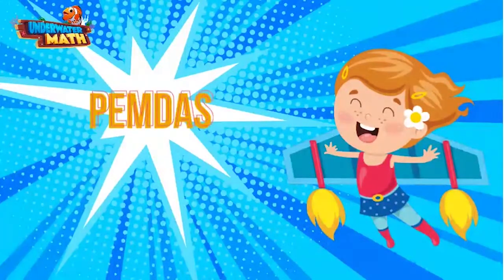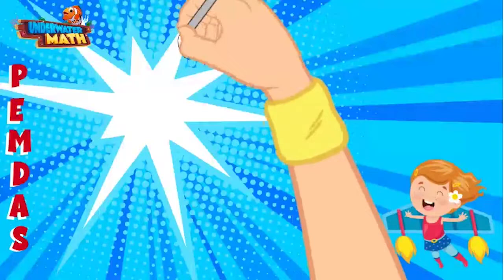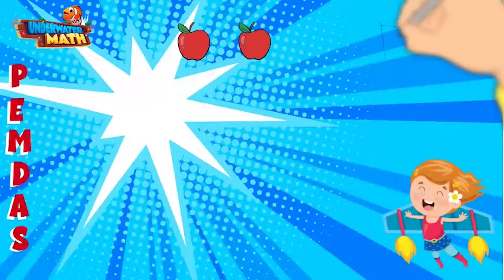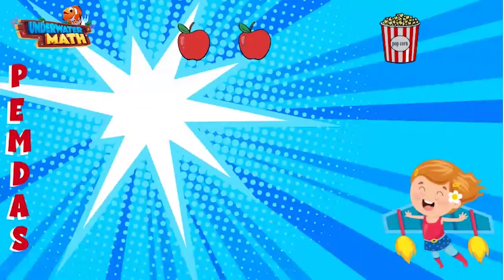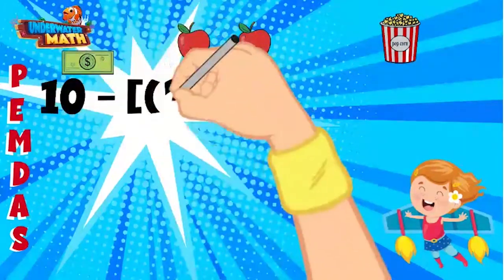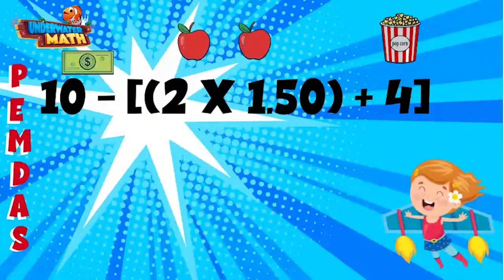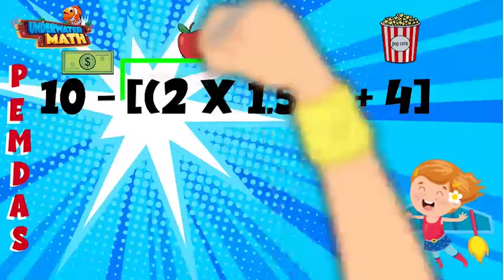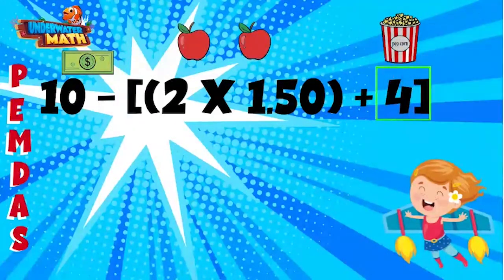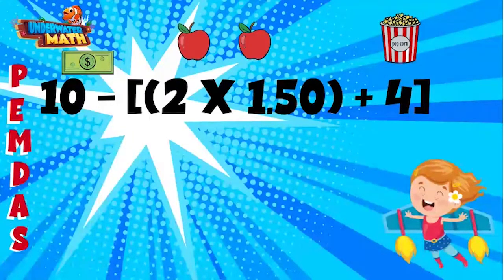I went to the store and bought two apples for one dollar and fifty cents each. I stopped to get some popcorn for four dollars and paid using a ten dollar bill. I can figure out my change using this expression. It shows my ten dollar bill, the two apples for one dollar fifty cents each, and the popcorn for four dollars. Let's simplify this expression using PEMDAS.